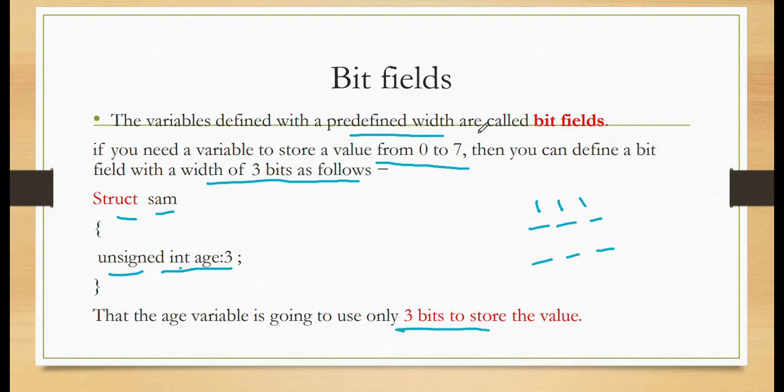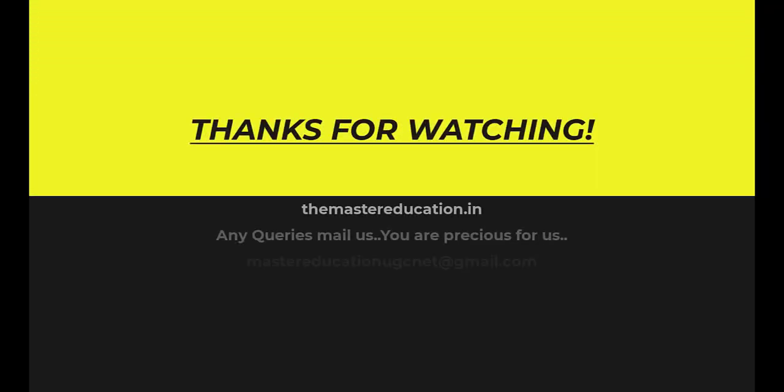Predefined width is called a bit field. In this structure, the variable int age is assigned 3, meaning it allows only 3 bits to store the value. Let's see. Thank you.